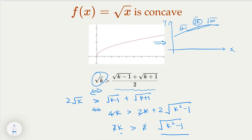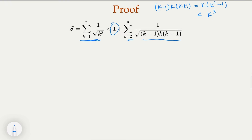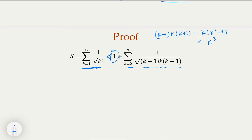We're going to use this in our original inequality. The first term is 1, and the remaining terms start from k equal to 2. Notice that k times k squared minus 1 is smaller than k to the third power, so it appears in the denominator. Since I'm replacing the original denominator with something smaller, the whole fraction gets bigger — I'm expanding it.